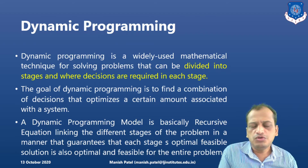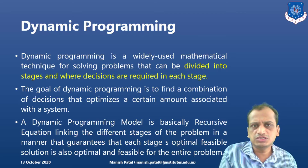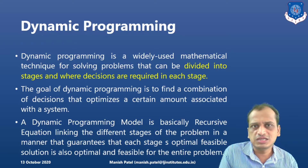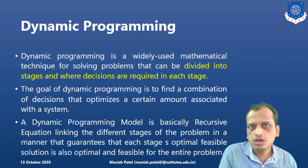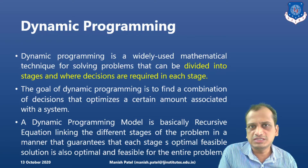What do we mean by dynamic programming? In linear programming problems, the functions involved — objective functions and constraints — were of linear type. Now, in dynamic programming, the problem is divided into different decision stages, and at each stage, decisions are to be made. We have to find the optimal decision making for the whole problem.